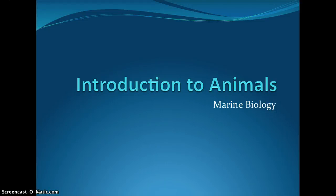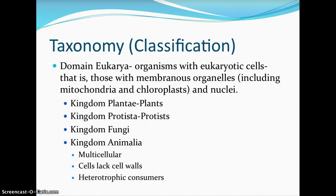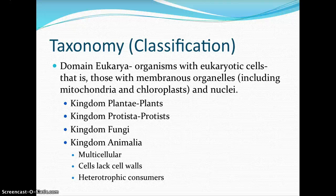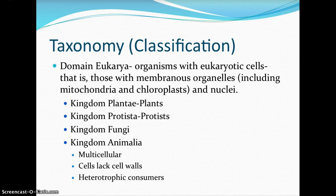Marine biology: introduction to animals. First, we look at the classification of animals, or what we call taxonomy. The father of taxonomy is Carolus Linnaeus, who developed a hierarchical system of classification going from domain, kingdom, phylum, class, order, family, genus, and species. Linnaeus also came up with binomial nomenclature, in which each organism is assigned a two-part scientific name called the specific epithet and the genus name.